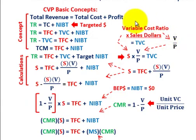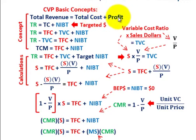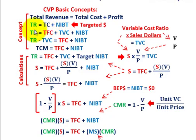So let's look at our solution. We're going to start out with the cost-volume-profit basic concept, where our total revenues equals our total cost plus whatever profit we're targeting. Total revenue equals total cost plus net income before taxes. So total revenue equals total fixed cost plus total variable cost, because that would be our total cost, plus net income before taxes.